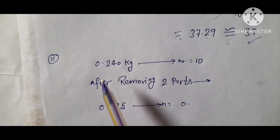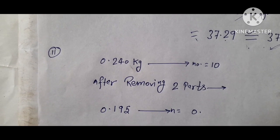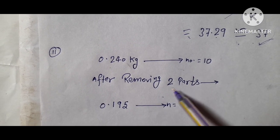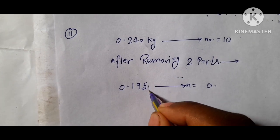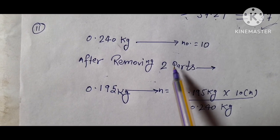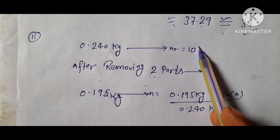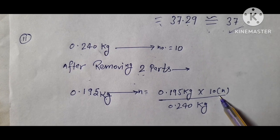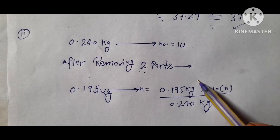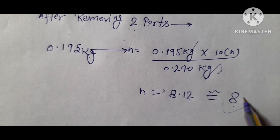This is the second calculation. If I am putting 10 parts then its mass will be 0.24 kg, and if you remove 2 parts then its mass will be 0.195 kg. So what will be the number of parts remaining? Number of parts equals 0.195 kg multiplied by 10 parts divided by 0.240 kg. After calculating, the units cancel out and you get the number of parts equal to 8.12, approximately 8 parts remaining.